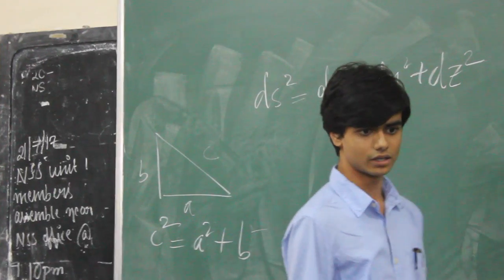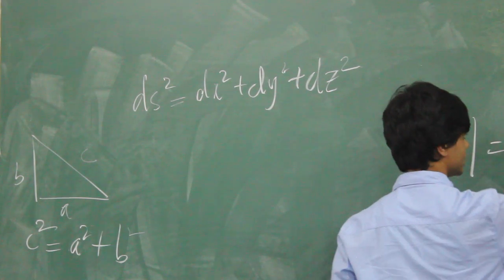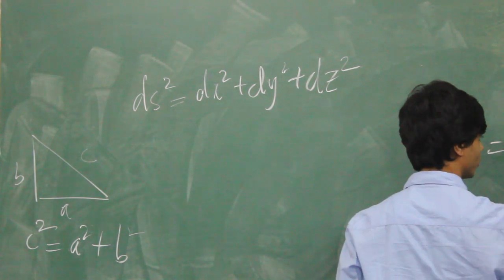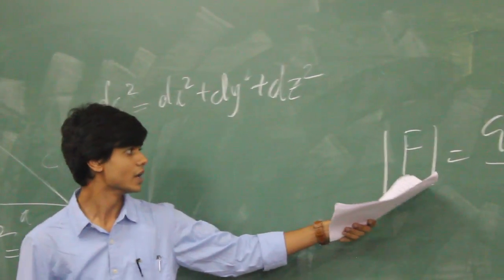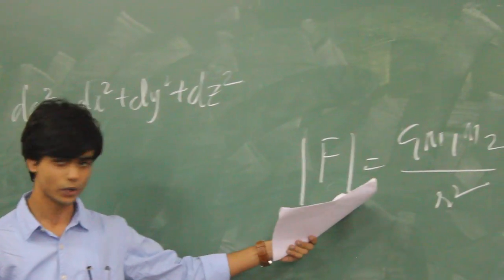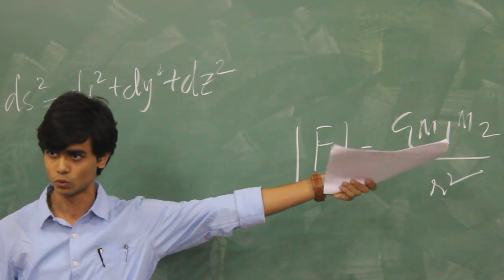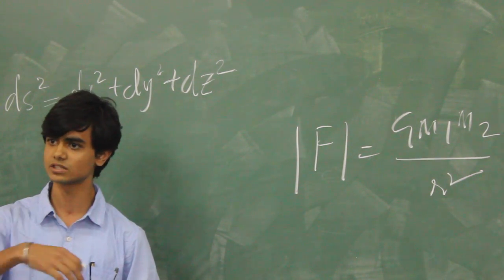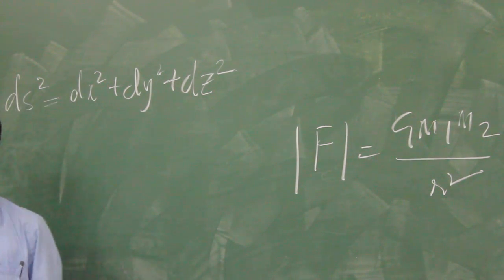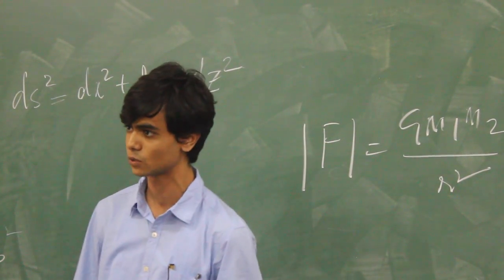But when Einstein realized that Newton's law, which was, we all know, is g m1 m2 over r square, this was Newton's law of gravitation. Einstein noticed that this equation gave only the magnitude of the force between masses m1 and m2. Newton himself wrote in his book Principia that he could not describe how this force mediated through the empty vacuum.